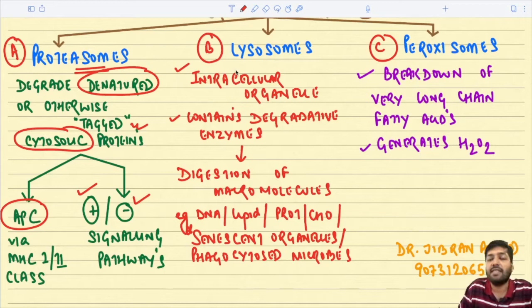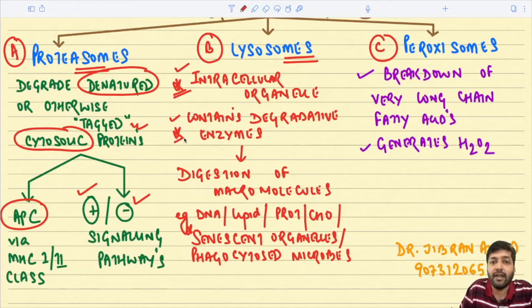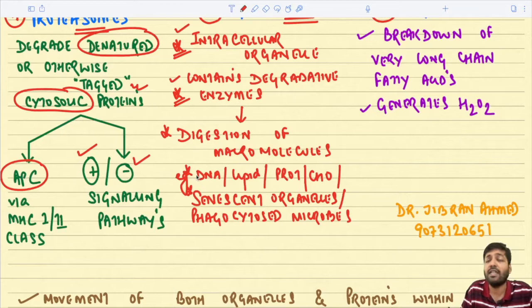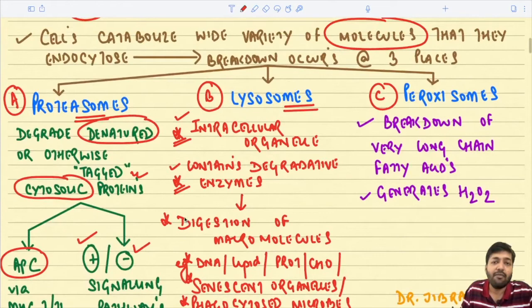The lysosome is an intracellular organelle containing degradative enzymes. It is mainly responsible for digestion of macromolecules — carbohydrates, proteins, lipids, and DNA — as well as degradation of senescent organelles that have lived out their lifespan. Phagocytosed microbes are also degraded inside the lysosome via formation of a phagolysosome. The pH inside the lysosome is acidic, providing a unique microenvironment where the degradative enzymes work best.